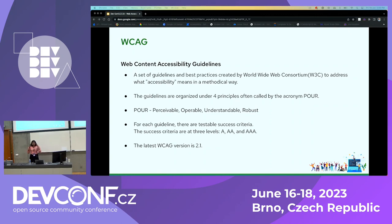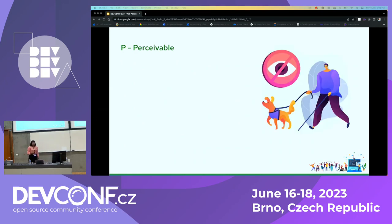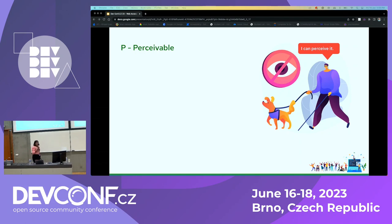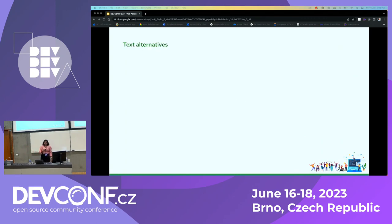Now we'll look at the principles in detail. The first principle is Perceivable. The Perceivable principle states that content should be presented in a way that can be perceived by all users. This means that even if the user is visually impaired, he or she should be able to perceive the application using a keyboard and assistive technologies such as screen readers.